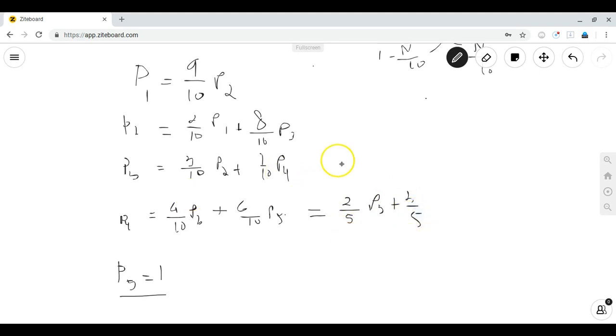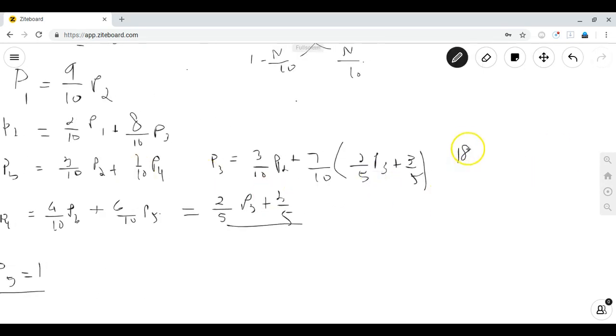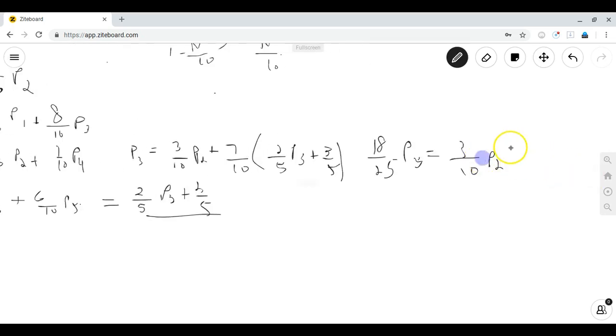Plugging this back into the third equation we see that p3 is equal to 3 tenths p2 plus 7 tenths p4 which is equal to 2 fifths p3 plus 3 fifths. Expanding we see that 14 over 25 p of 3 is equal to 3 tenths p of 2 plus 21 over 50. Multiplying both sides by 25 over 18 gives that p3 is equal to 5 over 12 p of 2 plus 7 twelfths.